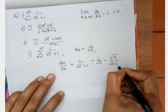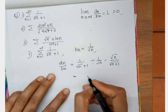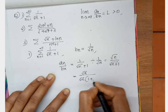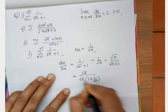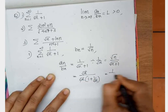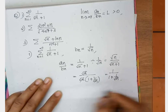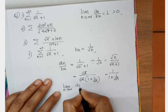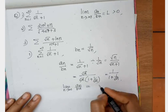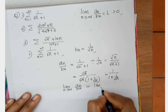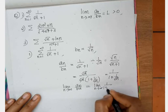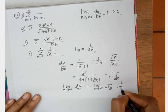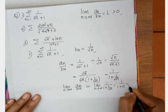This equals root n divided by root n times (1 plus 1 by root n). Taking root n outside, this cancels and gives 1 by (1 plus 1 by root n). Then the limit as n tends to infinity of aₙ by bₙ equals limit of 1 by (1 plus 1 by root n), which equals 1 by (1 plus 0) = 1, a positive number.